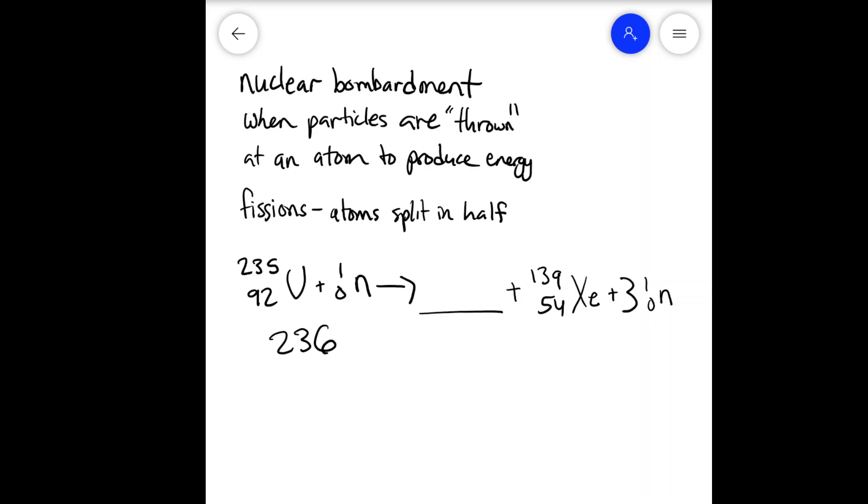Remember for nuclear equations, you need to get the mass numbers and the atomic numbers on both sides equal. So on this side we have a mass number of 236. We need an atomic number of 92. Well, on this side we already have, so neutron is always 1, but we have 3 neutrons. So we have to add those up. So we have a mass number of now 3 here plus 139, which is 142. And then we have atomic number of 54.